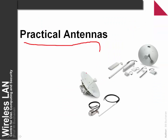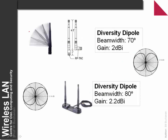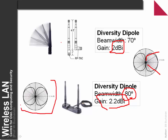Looking at practical antennas: we have our diversity dipole, which gives a gain of about 2 dBi — an increase of 2 dBi over a standard isotropic antenna — with a beam width of approximately 70 degrees. For this type of dipole, we can have a beam width of 80 degrees with a gain of 2.2 dBi. The dipole antenna has a fairly similar radiation pattern for both these configurations.